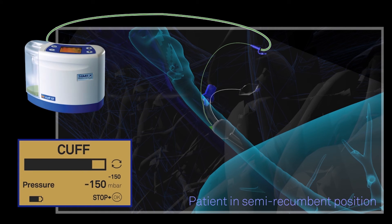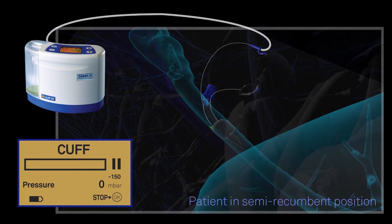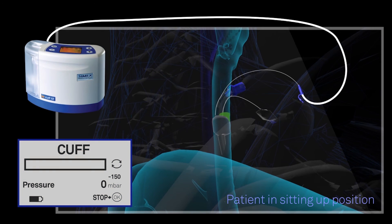The ideal position for most tracheostomy tubes on the market is between 30 and 40 degrees in a semi-recumbent position where most of the secretion can be aspirated. Notice that during the aspiration phase, normally 12 to 15 seconds in duration, the secretions are removed and collected in the collection canister.